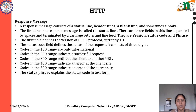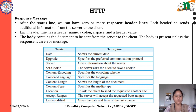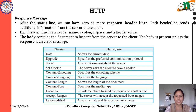The status phrase explains the status code in text form. After the status line, we can have zero or more response header lines. Each header line sends additional information from the server to the client. Each header line has a header name, a colon, a space, and a header value. The body contains the document to be sent from the server to the client. The body is present unless the response is an error message.